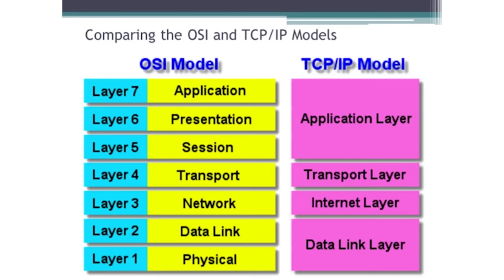In the TCP/IP model, they take the upper layers — layers 7, 6, and 5 — and they just call it the application layer.